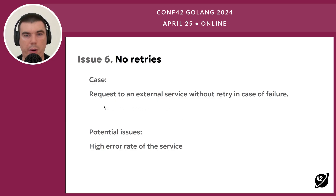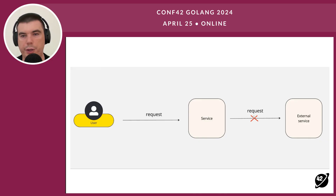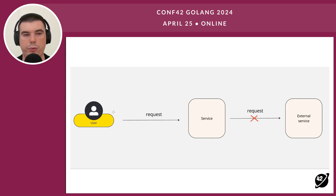Now let's talk about retries. Consider a simple example: just a client, a service, and an external dependency. A request can fail because of network issues, temporary outage, or something like that. We should handle these cases. We could retry — send the same request again. If we don't use a retry policy, we could end up with a high error rate and poor user experience.